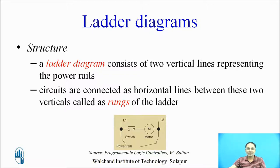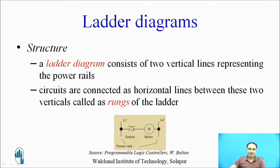Let us first understand the structure of ladder diagrams. In a ladder diagram, two vertical lines represent the power rails, and the circuit you want to implement is connected as horizontal lines between these two power rails — these are known as rungs of the ladder diagram. Here, these two lines represent power rails, while the switch and motor together make a rung. If the switch is pressed the motor will start; if the switch is released the motor will stop. This is a simple single rung.